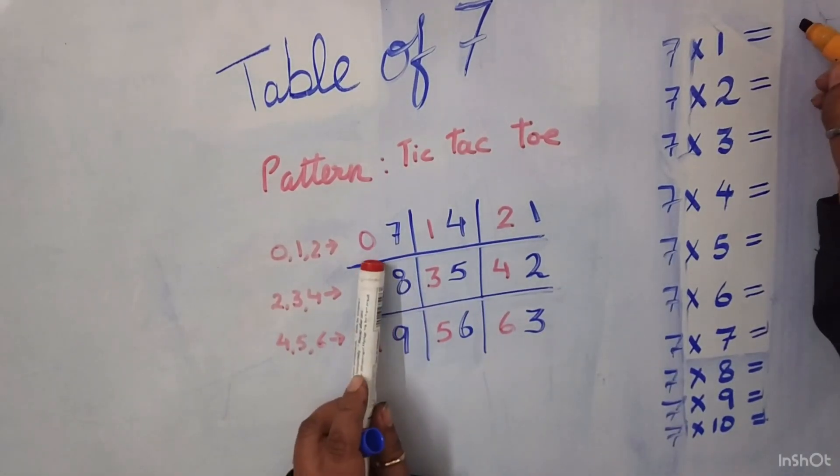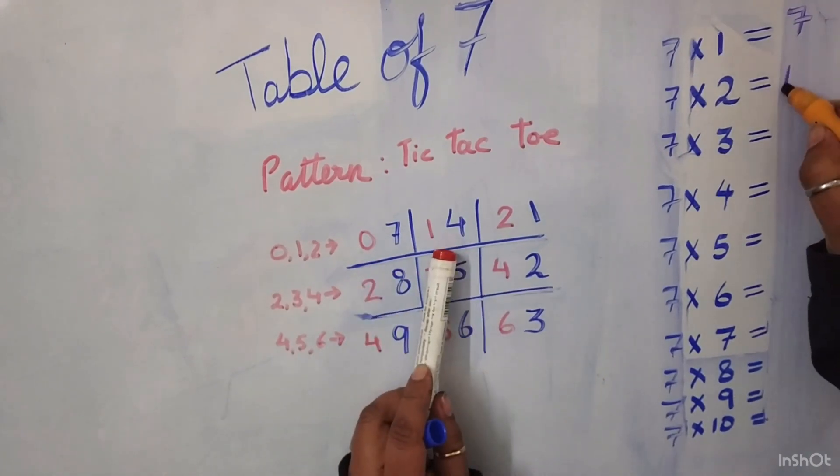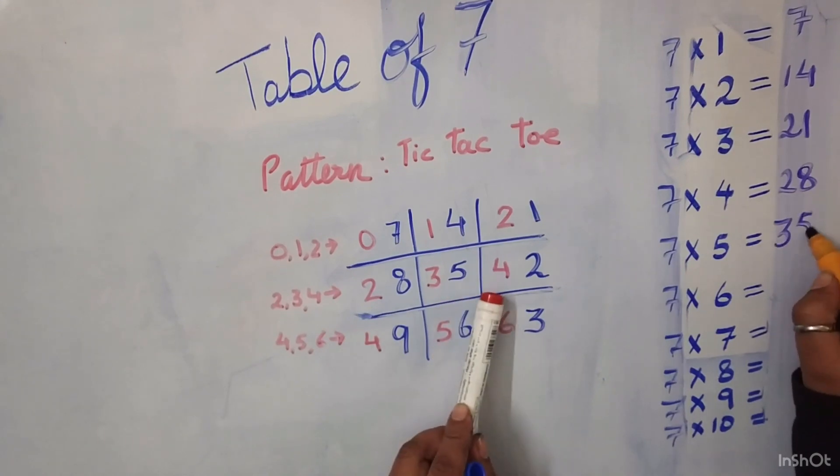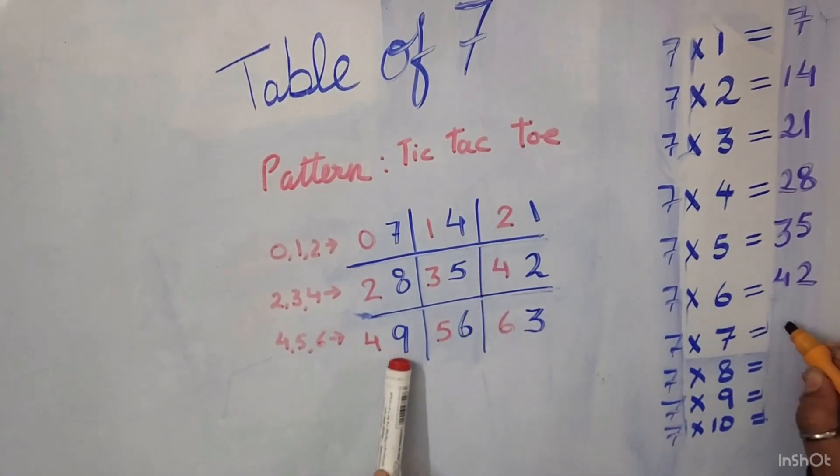Now our table is ready. 7 1's are 7, 7 2's are 14, 7 3's are 21, 7 4's are 28, 7 5's are 45, 7 6's are 42, 7 7's are 49, 7 8's are 56, 7 9's are 63 and 7 10's are 72.